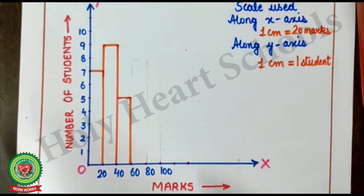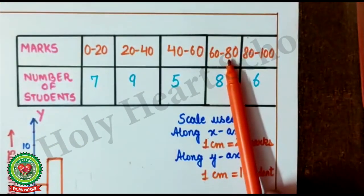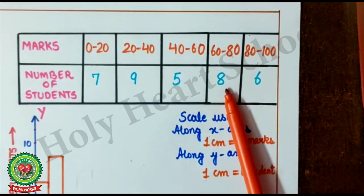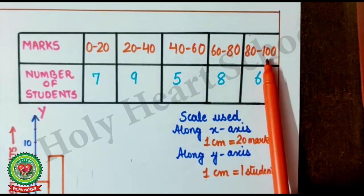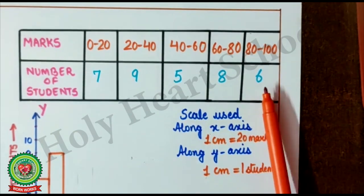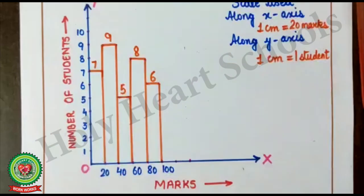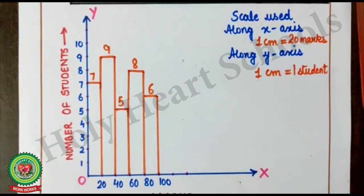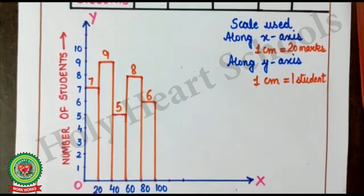Now, the next 60 till 80. Number of students, 8. And, 80 till 100. Number of students, 6. Now, draw next two bars. So, this is the final presentation of histogram.